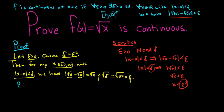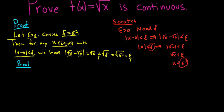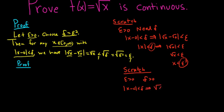Now for the second proof. We have to prove that the square root function is continuous at all positive numbers c. This one is going to be harder. Again, we have our epsilon greater than 0, and we need to find a delta greater than 0 such that whenever the distance between x and c is less than delta, that implies that the distance between √x and √c — that is, |f(x) − f(c)| — is less than epsilon.